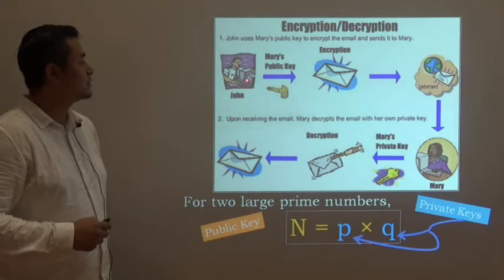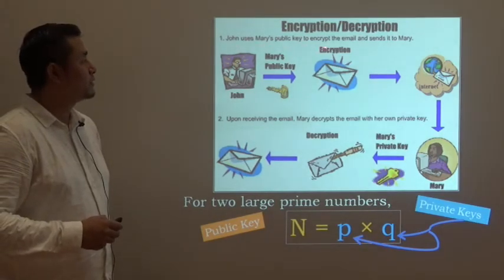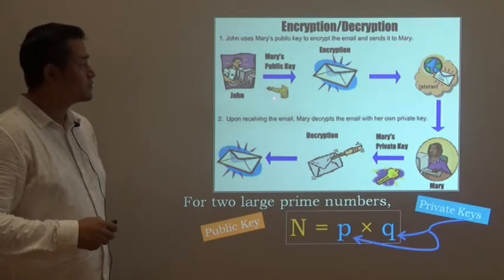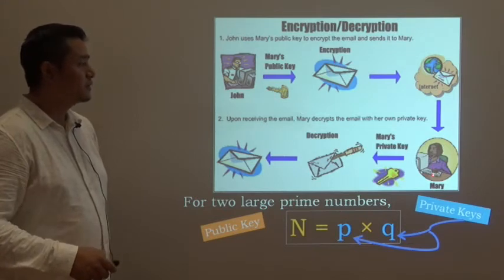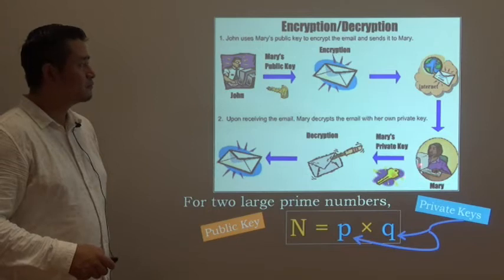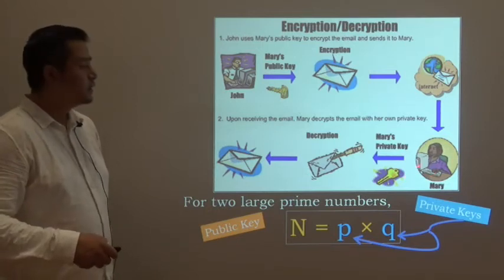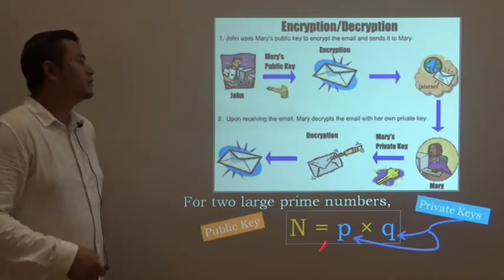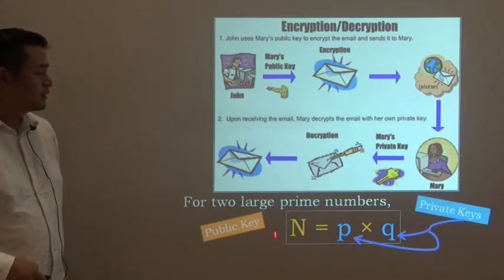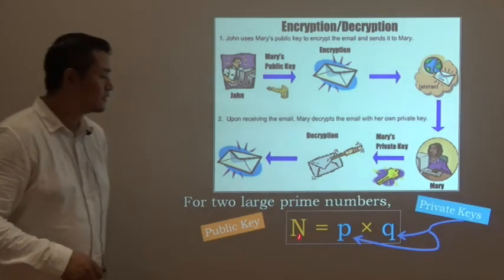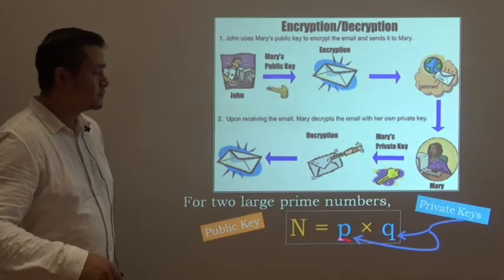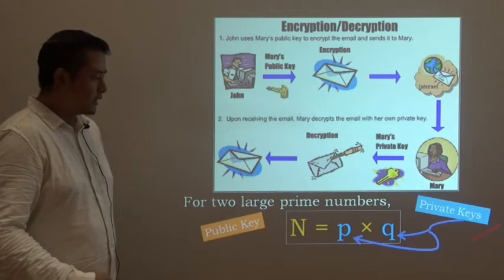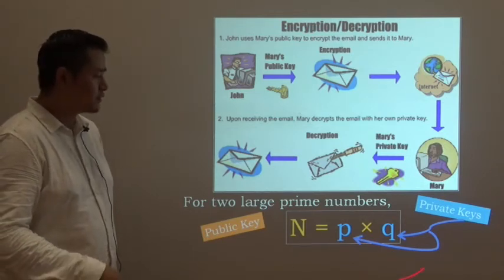It works like this: John uses Mary's public key to encrypt the email and sends it to Mary. Mary receives the encrypted envelope and decrypts using her private key to get the message. This public key can be your credit card number. P and Q are some prime numbers - the private key. There are some techniques, deeper mathematics which are used.